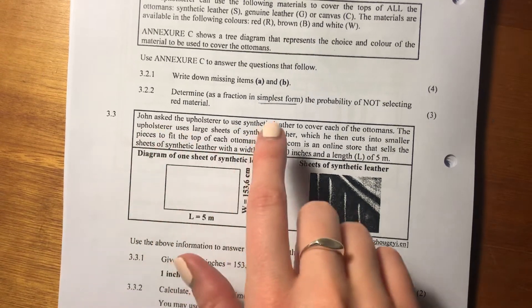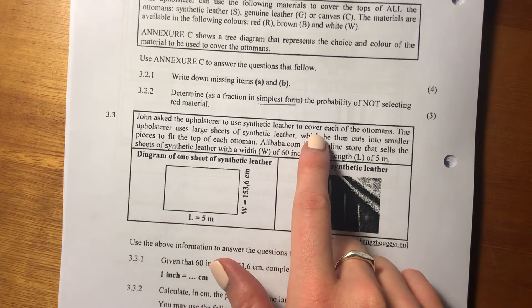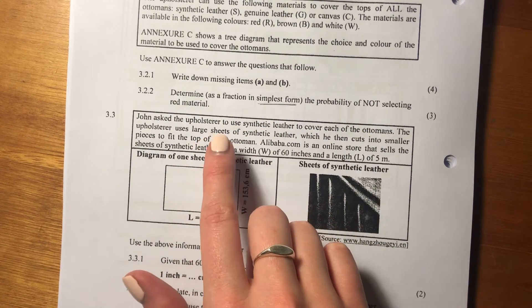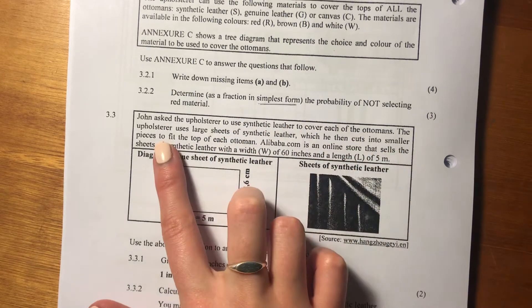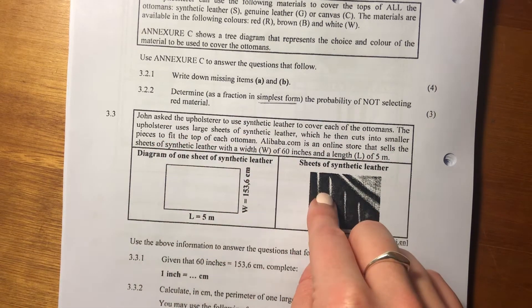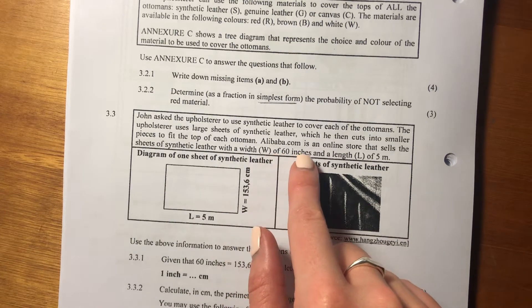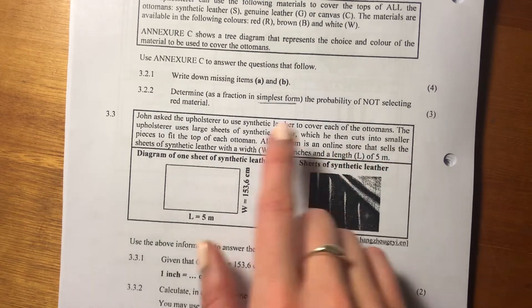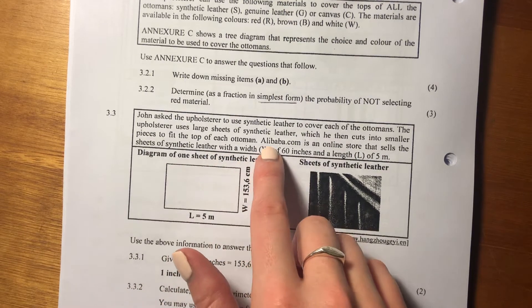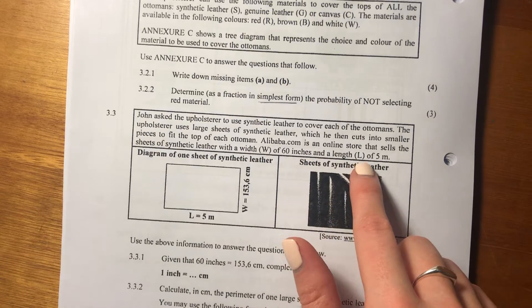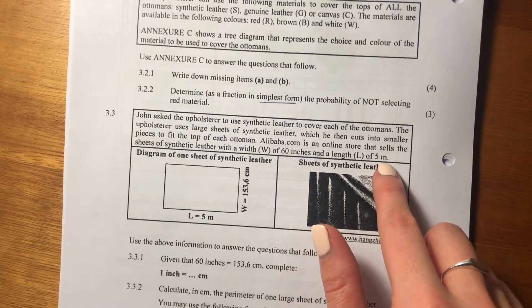So it says, John asked the upholsterer to use synthetic leather to cover each of the Ottomans. The upholsterer uses large sheets of synthetic leather, which he then cuts into smaller pieces to fit the top of each Ottoman. Alibaba.com is an online store that sells sheets of synthetic leather with a width of W of 60 inches and a length of L of 5 meters.